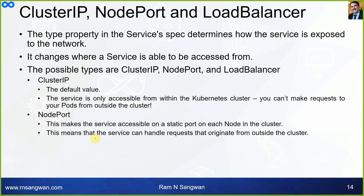ClusterIP, NodePort, and LoadBalancer — what is the difference and the use case for each? The `type` property in the service manifest specification determines how the service is exposed to the network. ClusterIP is the default value if not specified — the service is only accessible from within the Kubernetes cluster; you cannot make requests to your pod from outside the cluster.